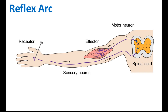Instead, the spinal cord makes a decision by itself, without your consciousness. The decision is to withdraw your hand — to pull it back to avoid further injury. Between the motor neuron and the sensory neuron, there is a relay neuron. The spinal cord sends the impulse straight to the effector, the muscles contract, and your hand is withdrawn from the nail to prevent further injury. The pathway from the receptor, to the sensory neuron, to the spinal cord, to the motor neuron, to the effector is called the reflex arc.